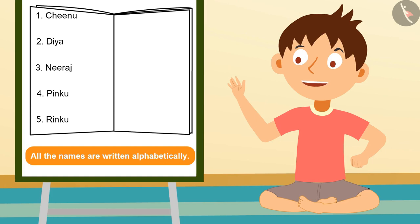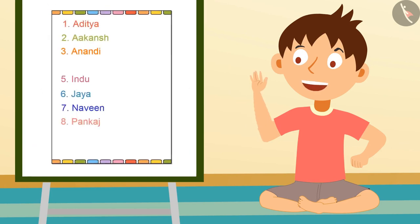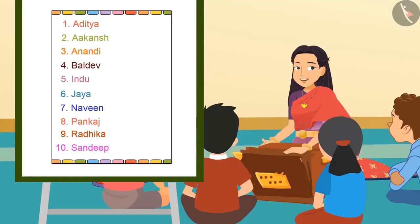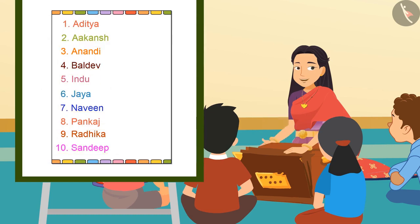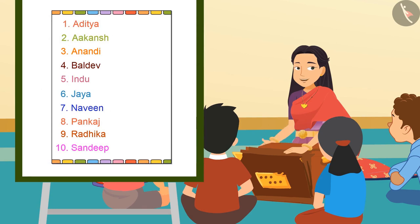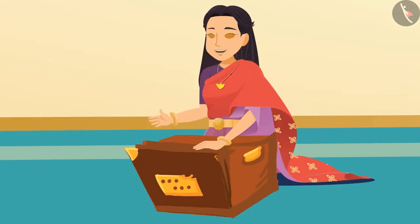Very good! Our school teacher has also written names in the same order. Writing all names alphabetically is a kind of pattern. So we can say this is a pattern made of alphabets. Ma'am, are there any more examples of alphabetical patterns?